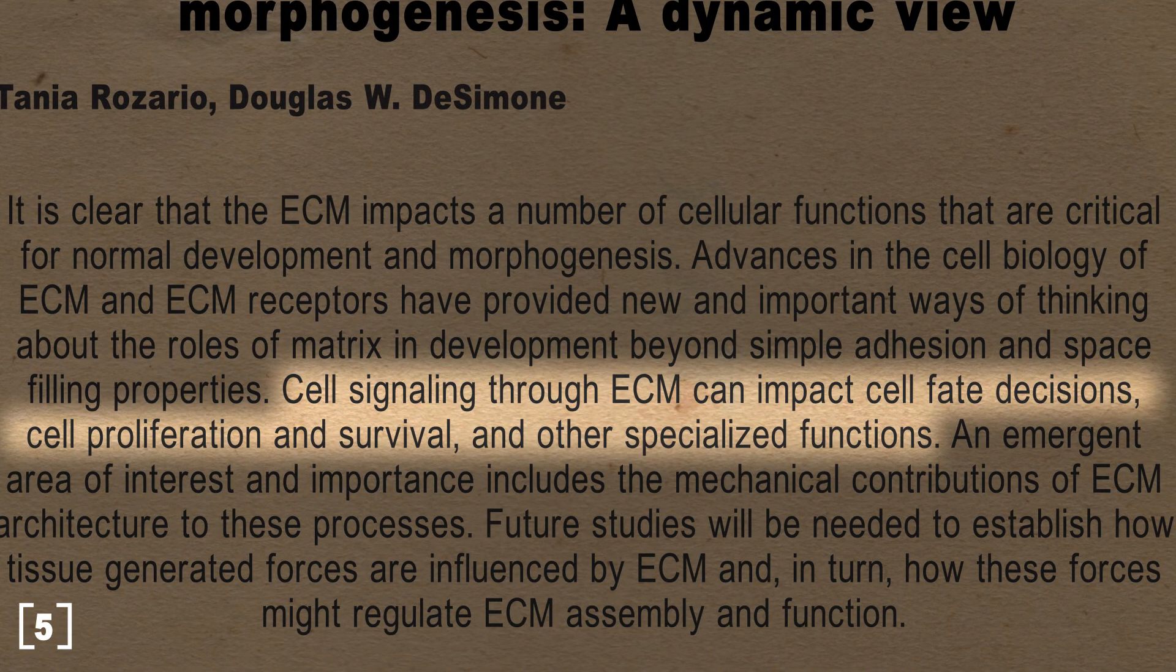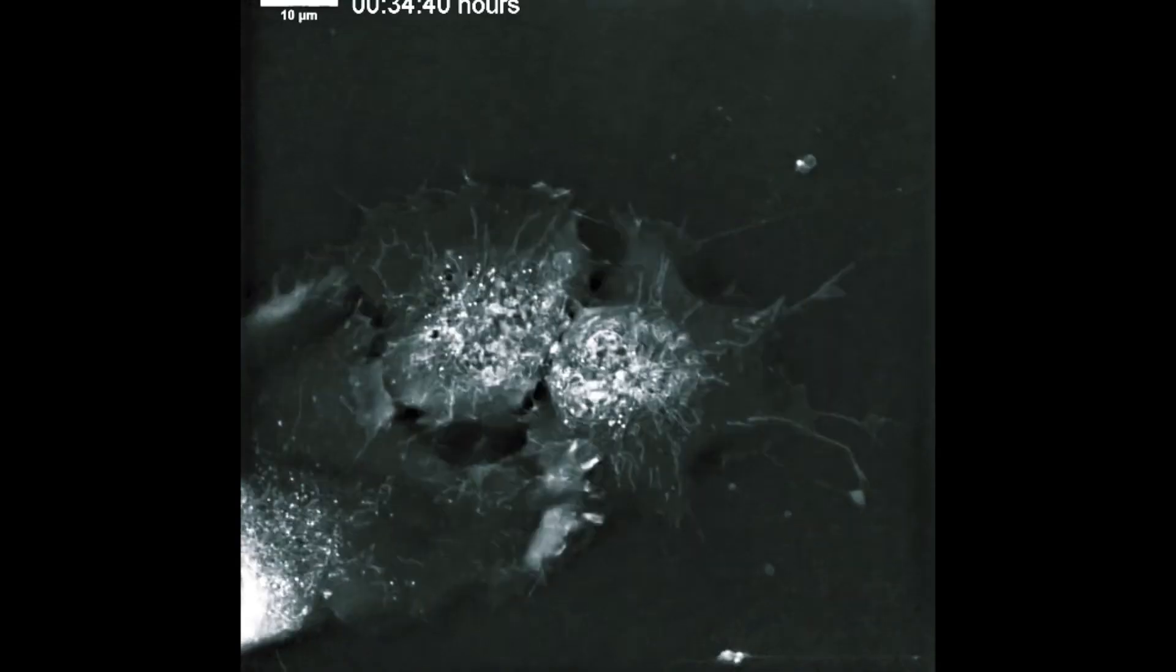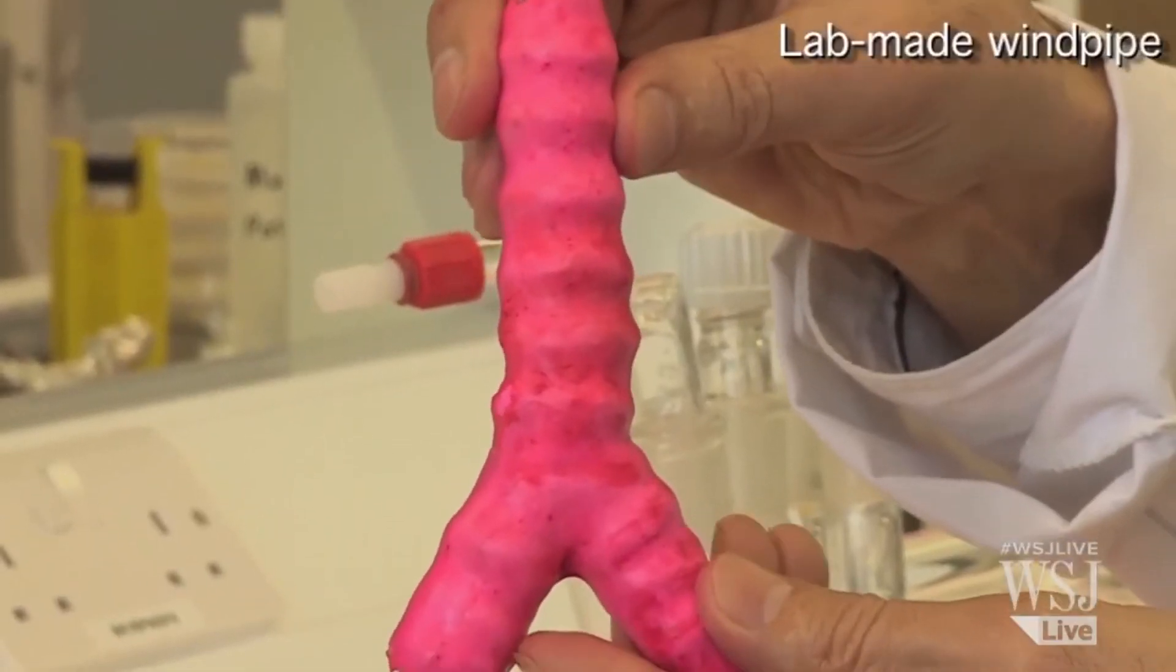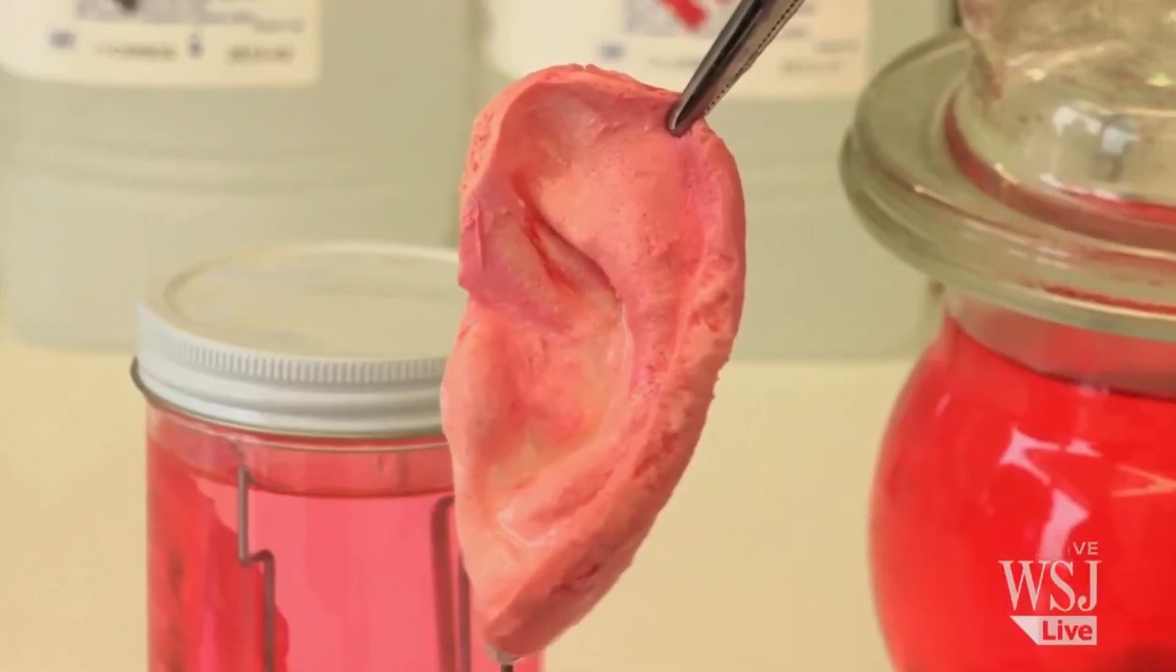The extracellular matrix essentially contains an imprint of the developmental history of the tissue which continues to influence cell phenotype and tissue homeostasis even in the mature state. By using the information in the ECM, we can engineer specific tissues and organs for regenerative purposes.